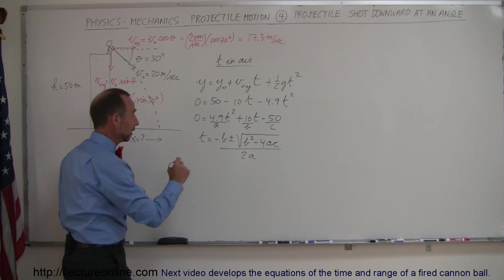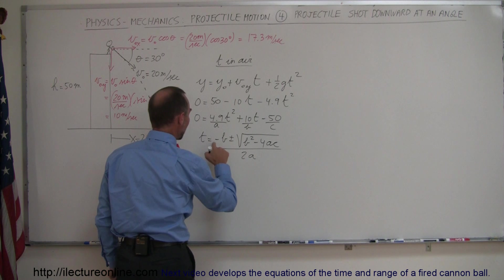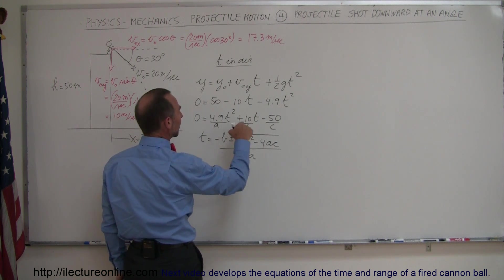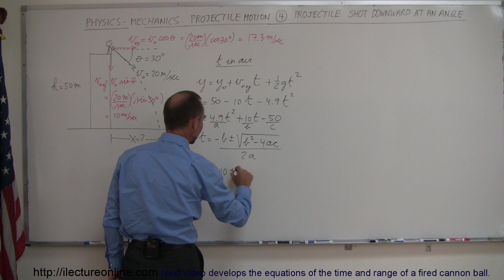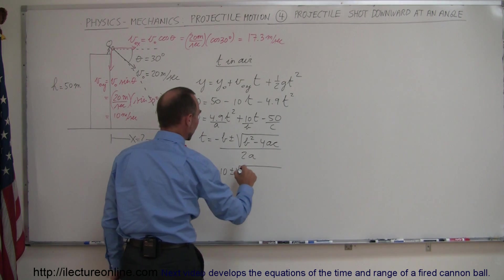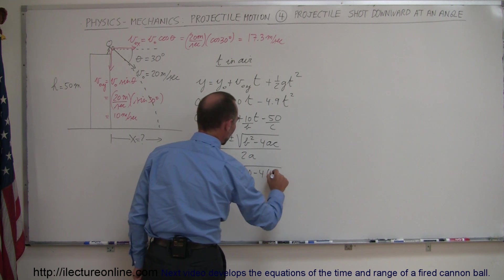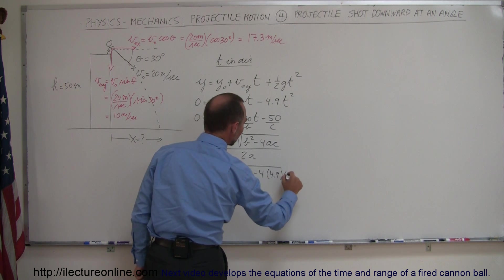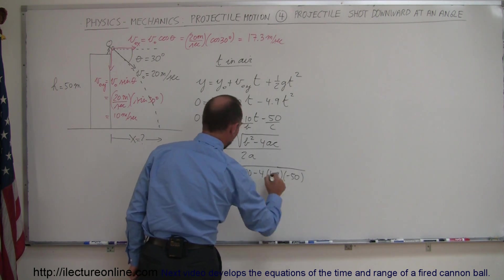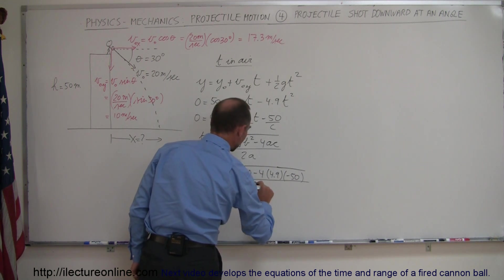So we can go ahead and plug those numbers in. So we have t is equal to minus b, let's see we have a plus 10 that becomes a minus 10, plus or minus the square root of b squared which is 100 minus 4 times a which is 4.9 times c which is minus 50, and divide the whole thing by 2a which is 9.8.